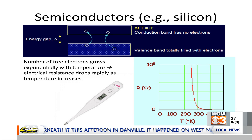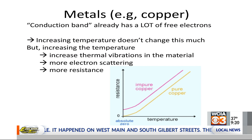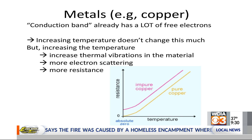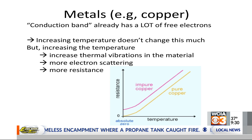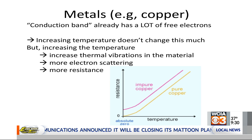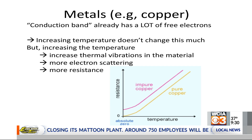Metals turn out to be really different. In a metal, that upper band has a lot of free electrons — basically one per atom instead of only one in a billion. Increasing the temperature doesn't really change that much, because there are already so many that adding an extra one in a billion doesn't do anything. What it does do is cause the material to vibrate more, and that vibration causes the electrons to scatter, so there's more resistance. If we increase the temperature, the resistance goes up instead of going down.